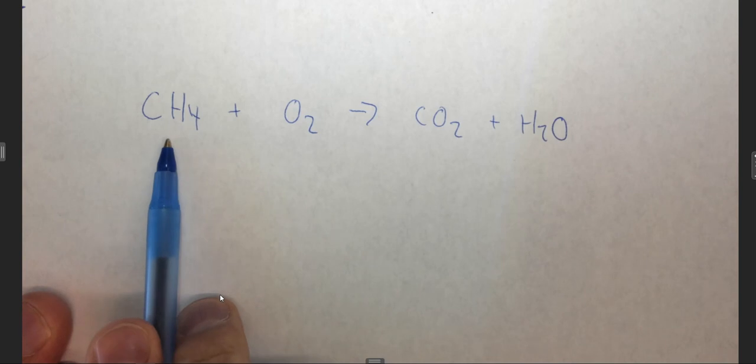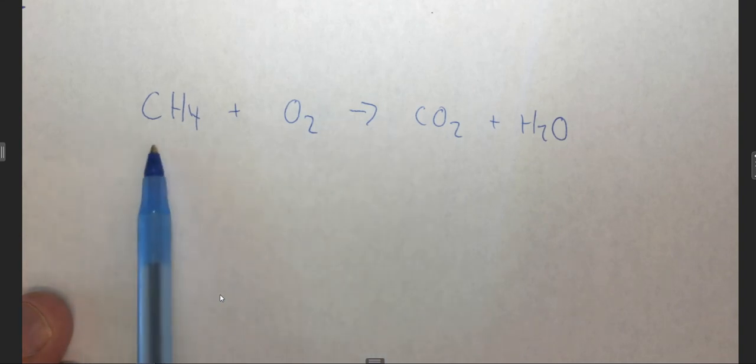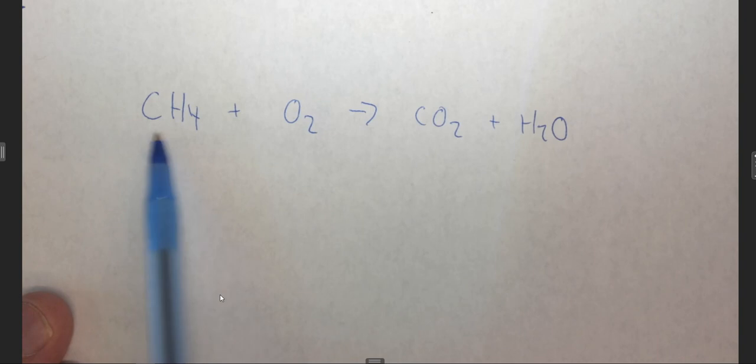So methane is about 85% of natural gas. And I will note, I have not included states of matter, and this is not balanced for those of you who have had chemistry before. We'll get to that later. But we have methane plus oxygen yields carbon dioxide and water.